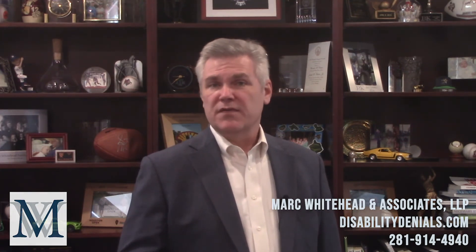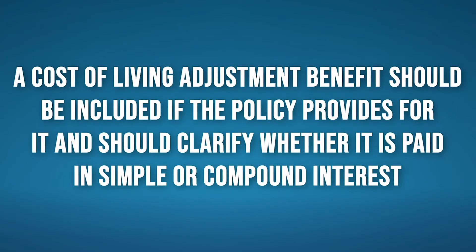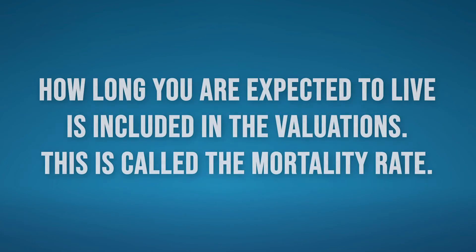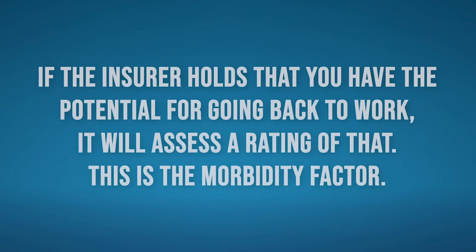We also look at the following factors. A cost of living adjustment benefit should be included if the policy provides for it, and should clarify whether it's paid with simple or compound interest. Because benefits are to be paid from now until retirement age or some other future time, how long you're expected to live is included in the valuations — this is called a mortality rate. If the insurer holds that you have the potential to go back to work, it will assess that as well, which is called a morbidity factor.